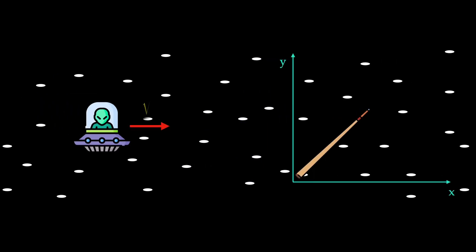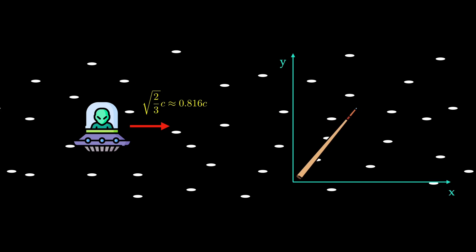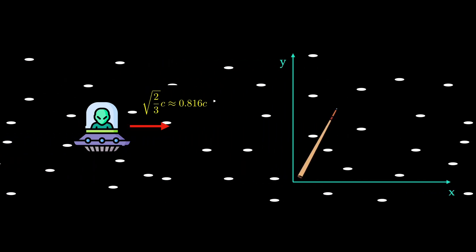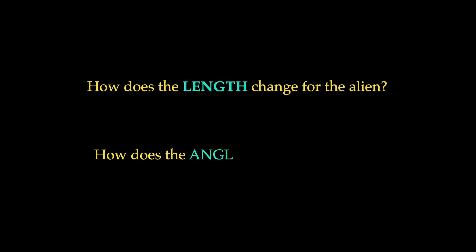Now let's put this inclined rod in interstellar space. An alien ship is flying towards it at a speed of roughly 80% of the speed of light. How does the length of the rod change? And more interestingly, how does the angle change?